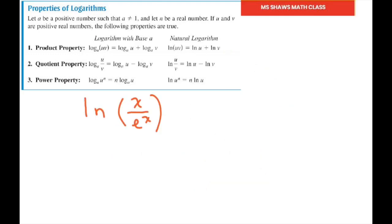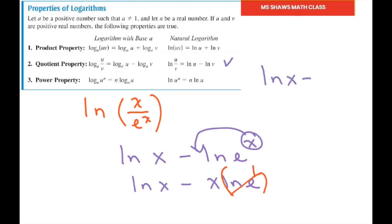And this one is very similar but it's with the quotient property. So you have ln of X minus ln of E to the X. Do your power property. So you have ln of X minus X ln of E. So ln of E is just 1. So 1 times X is X. So you get ln of X minus X.